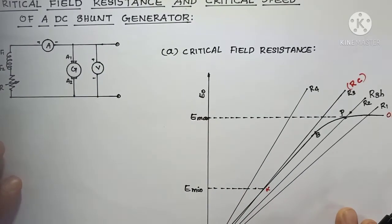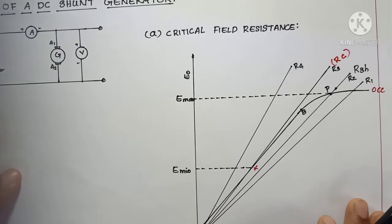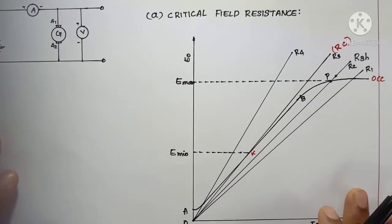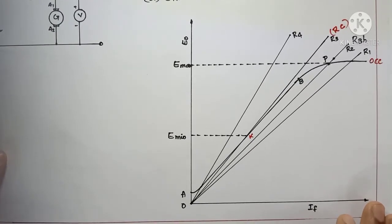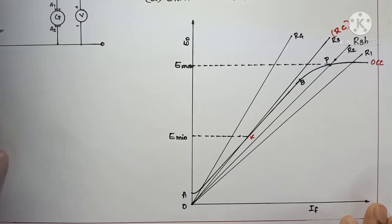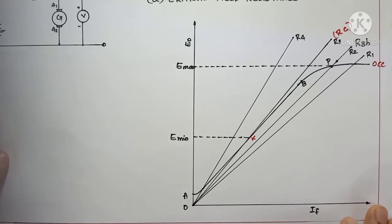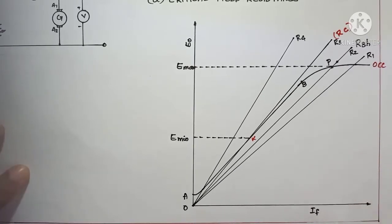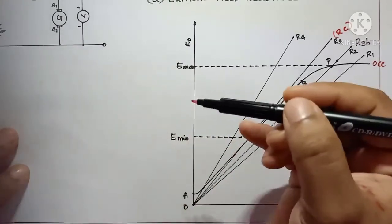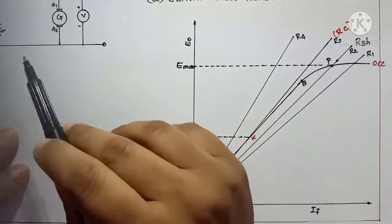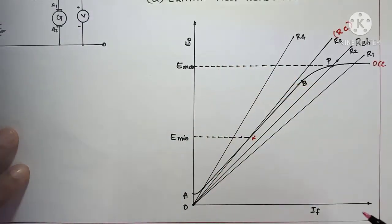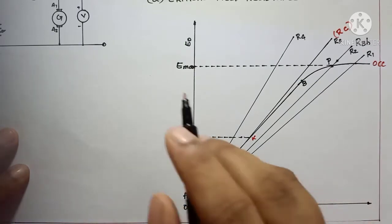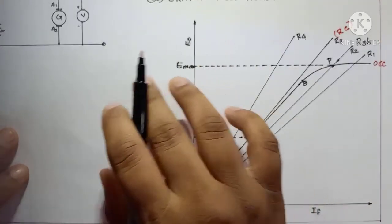The corresponding voltage for each value of IF field current can be measured as the terminal voltage using this voltmeter. You will get the open circuit characteristics from the relationship between E0 and IF. E0 is nothing but the no-load generated EMF or no-load induced EMF, and IF is the field current. If you increase your field current using the rheostat in each step, you will get a particular value of IF and the corresponding voltage.